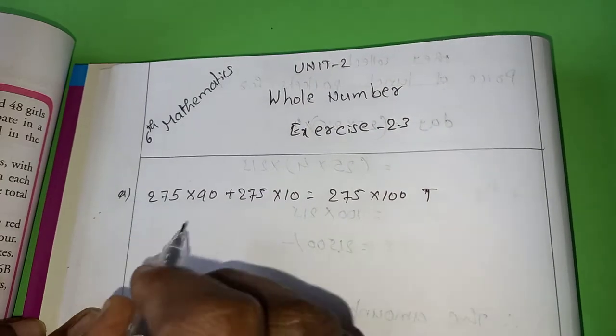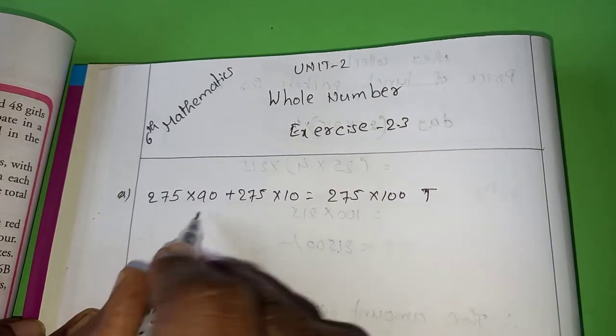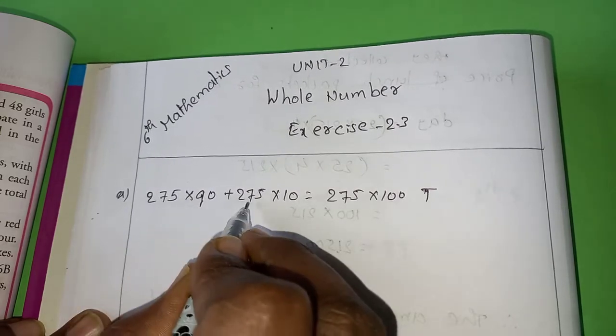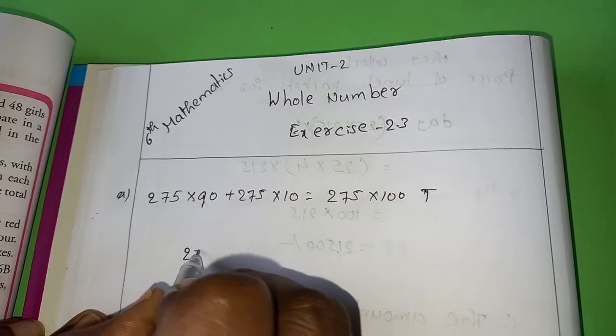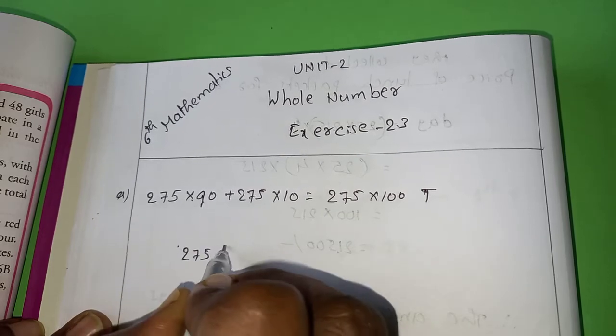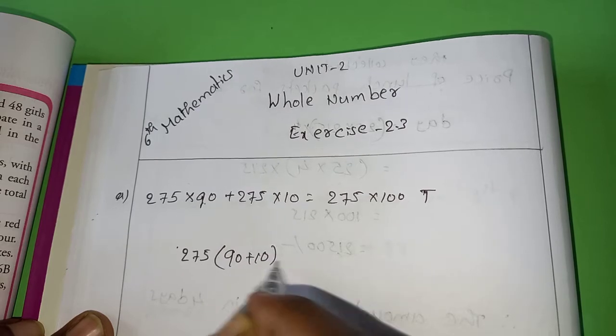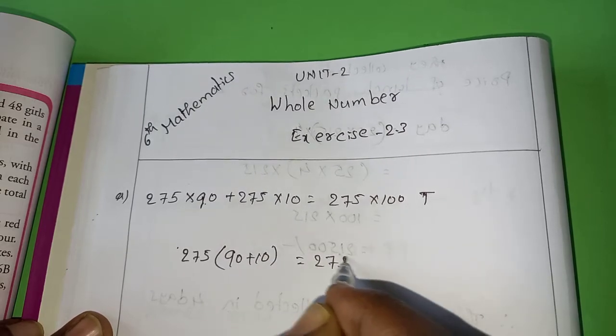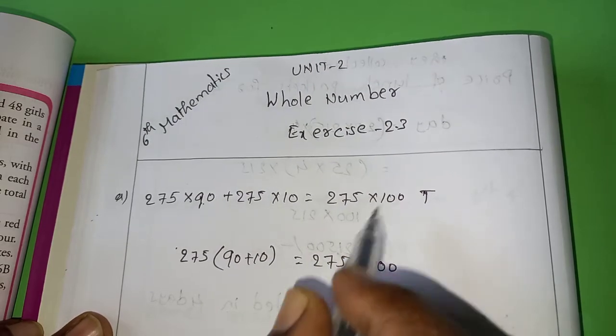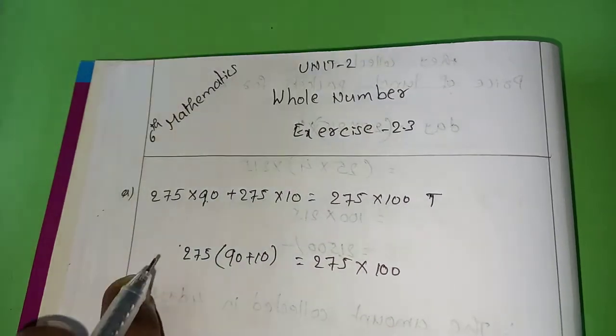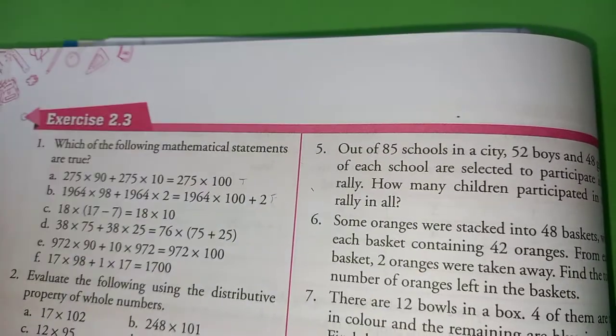How? Because by looking at this, you can easily calculate the answer because it is looking like a distributive property. Here 2.75, 2.75 are common. 2.75 into 90 plus 10, so 2.75 into 100 only. That is correct, right.